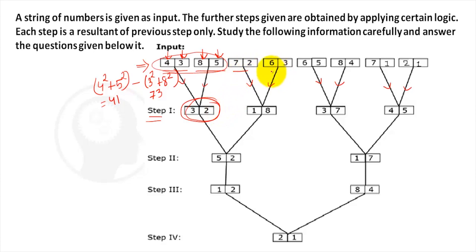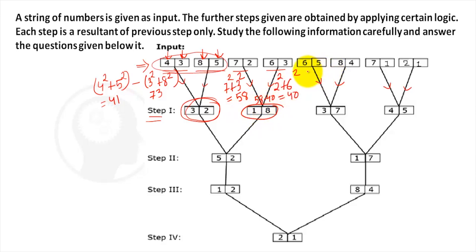Applying the same logic: 6 squared plus 4 squared = 52, and 5 squared plus 8 squared = 89 — wait, 5 squared plus 1 squared = 50, and 1 squared plus 2 squared = 5, so 50 minus 5 = 45. Now for Step 2: 3 squared plus 2 squared = 13 for one box, and 1 squared plus 8 squared = 65 for another box, so 65 minus 13 = 52.